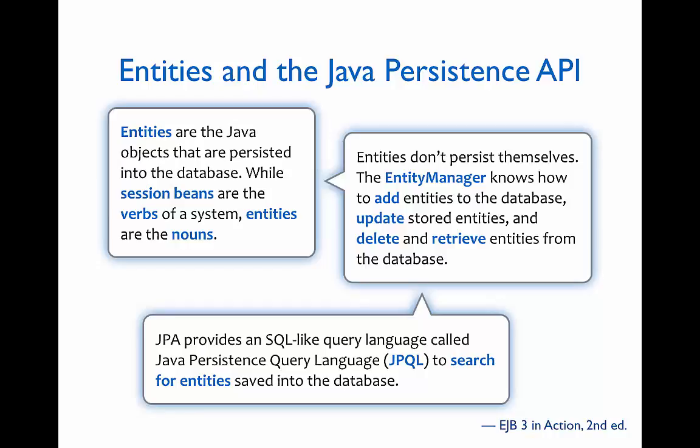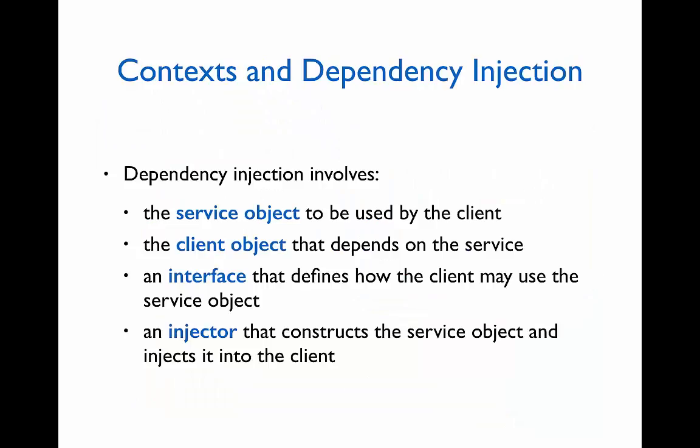JPQL is the SQL-like query language that JPA uses to search for entities. Besides JPA, there is one other specification related to the EJB specification that deserves mention. That is the CDI specification, which stands for context and dependency injection.